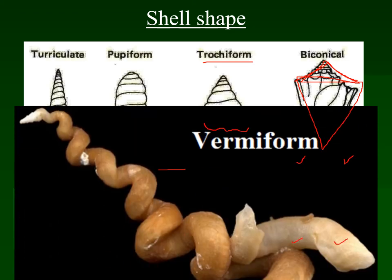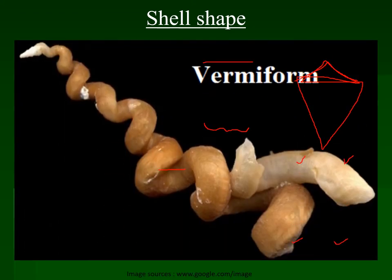Apart from these, scientists often find gastropod shells where whorl formation is not in a regular manner — sometimes whorls are not touching each other, sometimes they touch differently at different places. This type of irregular formation of gastropod shell with no particular pattern, where mostly the whorls are open and not touching the previous whorls, is known as bhaniform gastropod shell.